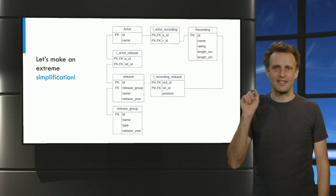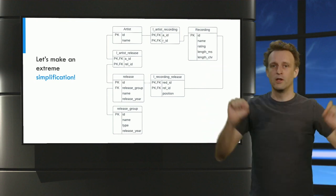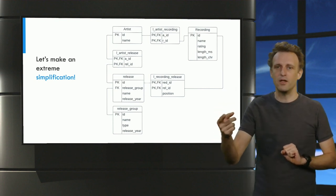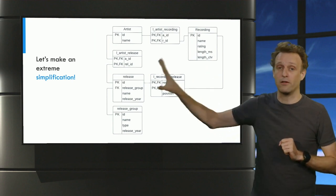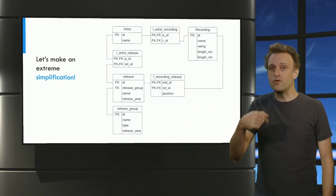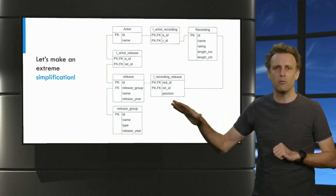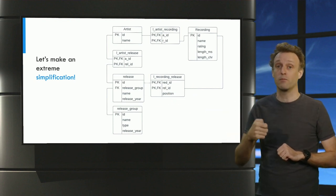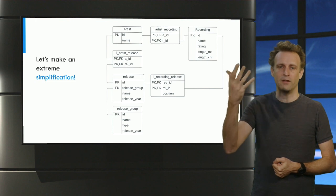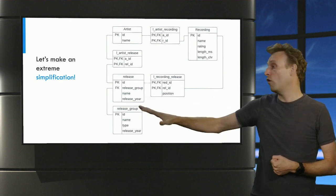The fascinating part about this simplification is that I could do it completely within my local database management system using a concept called views. Views are virtual tables which can be defined using SQL queries that dynamically load data from other existing tables. Essentially, I created the simplified logical schema, but when using it, the DBMS will translate and map all my queries to the significantly more complicated schema with 296 tables. This allows me to run simple toy examples while still using the full extent of the 2 million artists and 27 million recordings of the real database.